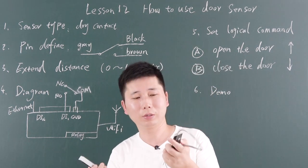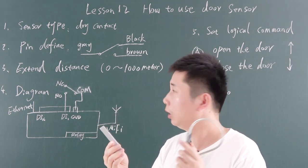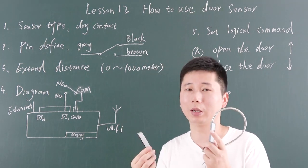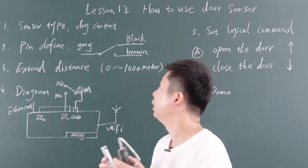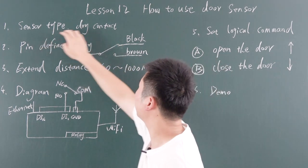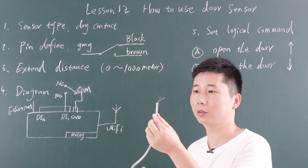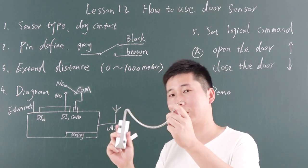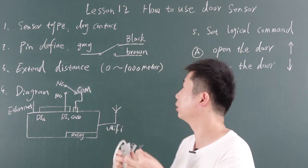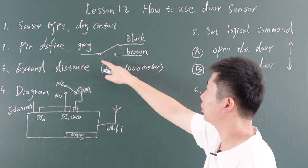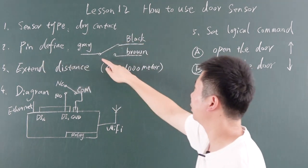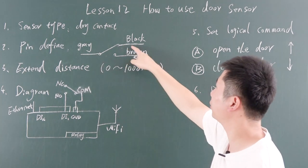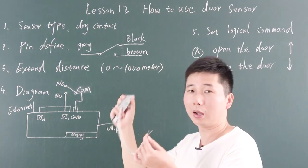This is the door sensor — the wider solution door sensor. This is the easiest and most used sensor in the home automation system. The sensor type is dry contact. It does not work with a power supply; you do not need to connect the power supply. Just like a switch, it has COM, normal close, and normal open.